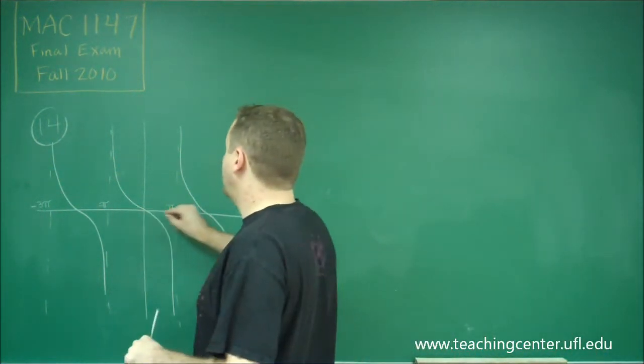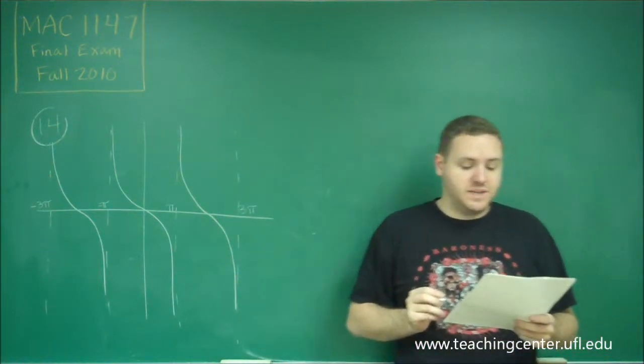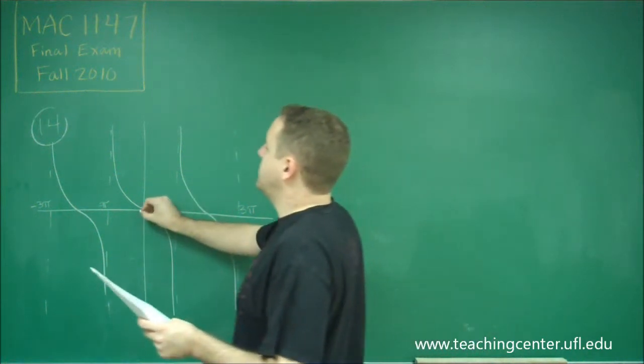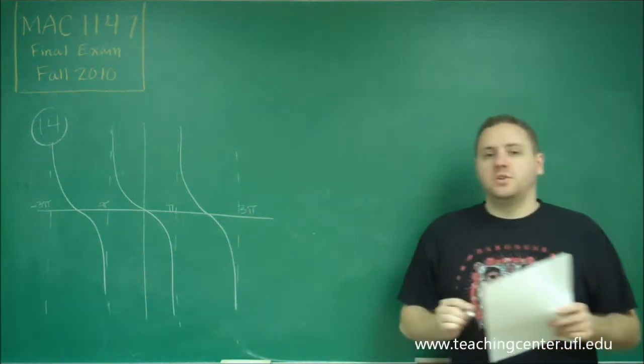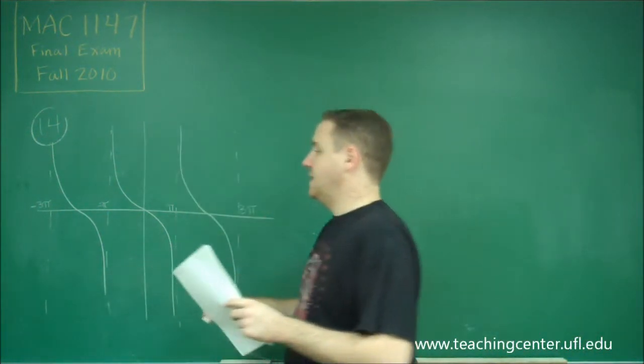We have a period length of 2π, so remember that your standard period length for tangent and cotangent is π. So we have double the period length, we're crossing through the origin, and we have asymptotes at odd multiples of π. The other thing you want to notice is that this graph is falling, it's going from up to down in each period.